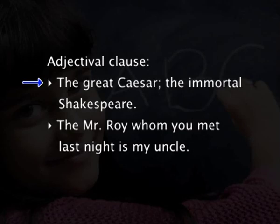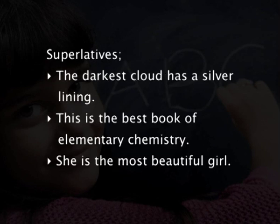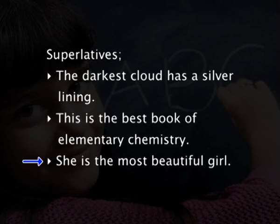Before a proper noun when it is qualified by an adjective or defining adjectival clause — for example, the great Caesar, the immortal Shakespeare, or 'the Mr. Roy whom you met last night is my uncle'. With superlatives: 'the darkest cloud has a silver lining', 'this is the best book of elementary chemistry', 'she is the most beautiful girl'. With ordinals: 'he was the first man to arrive'. Before musical instruments: he can play the flute, the guitar, the piano. Also before an adjective when the noun is understood: 'the poor are always with us'.